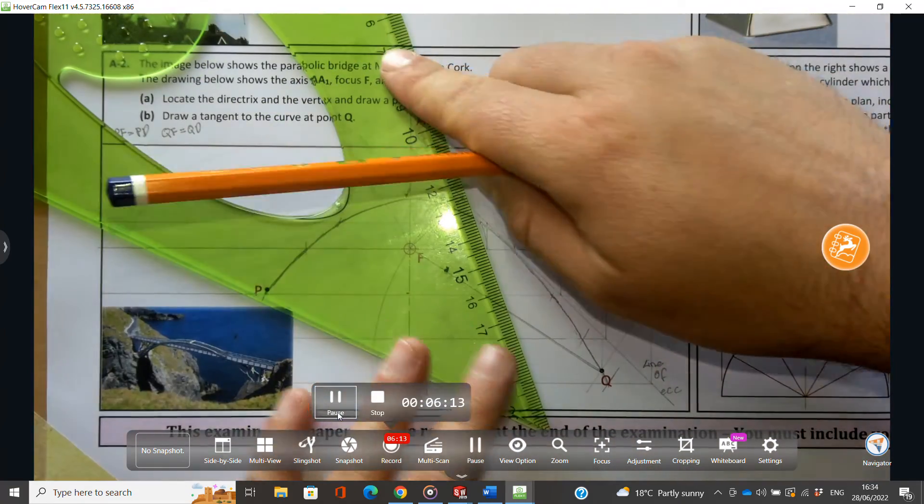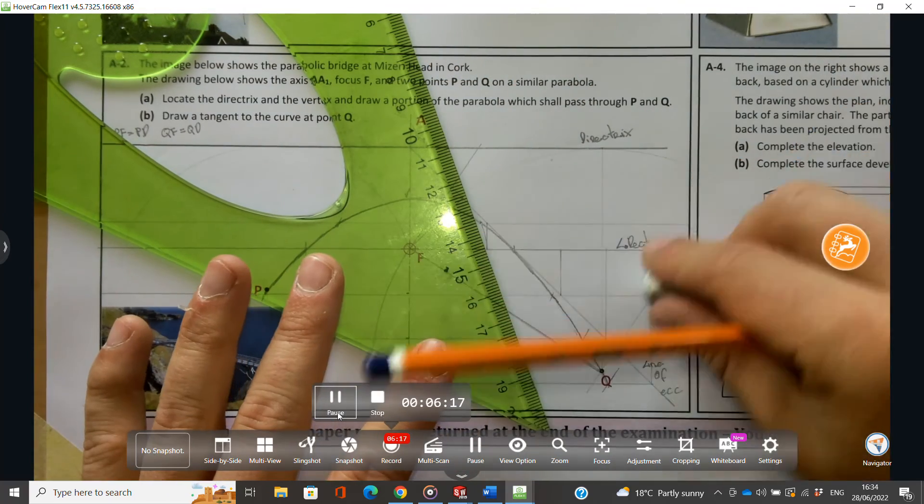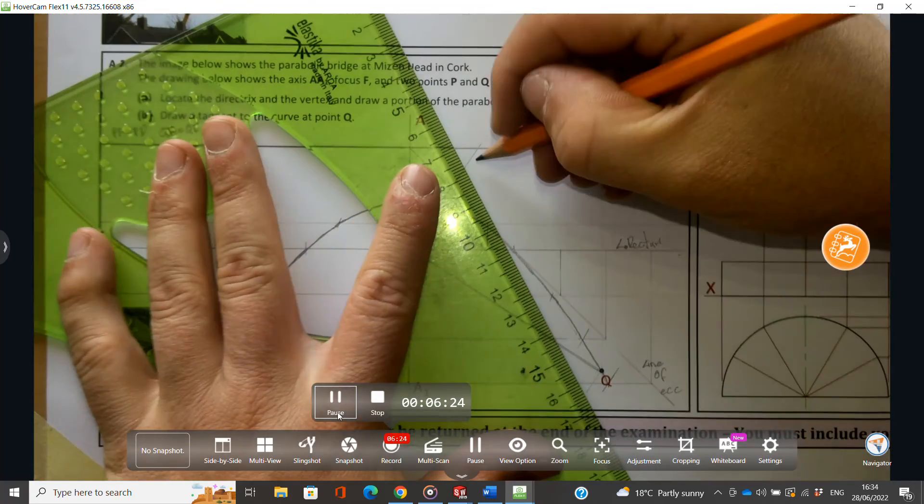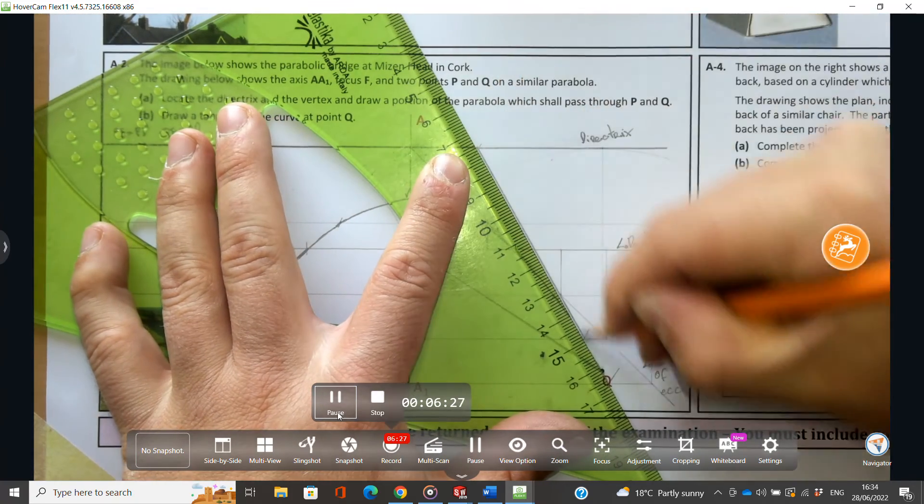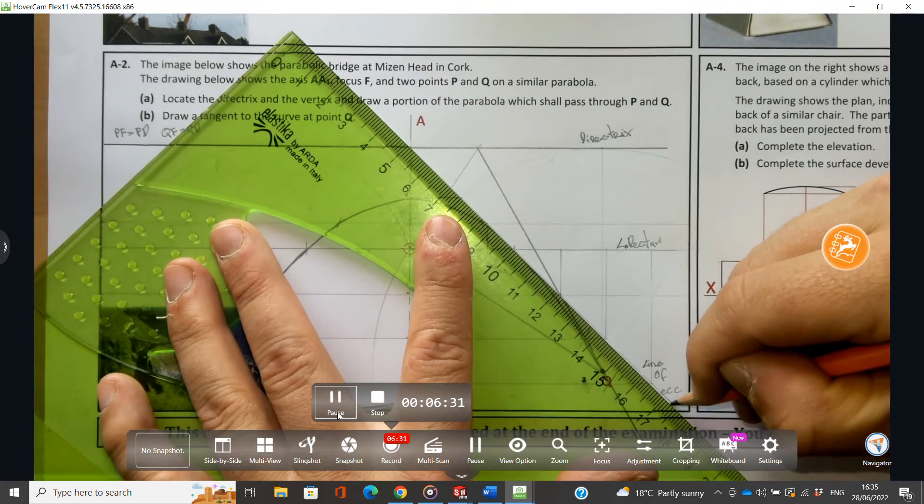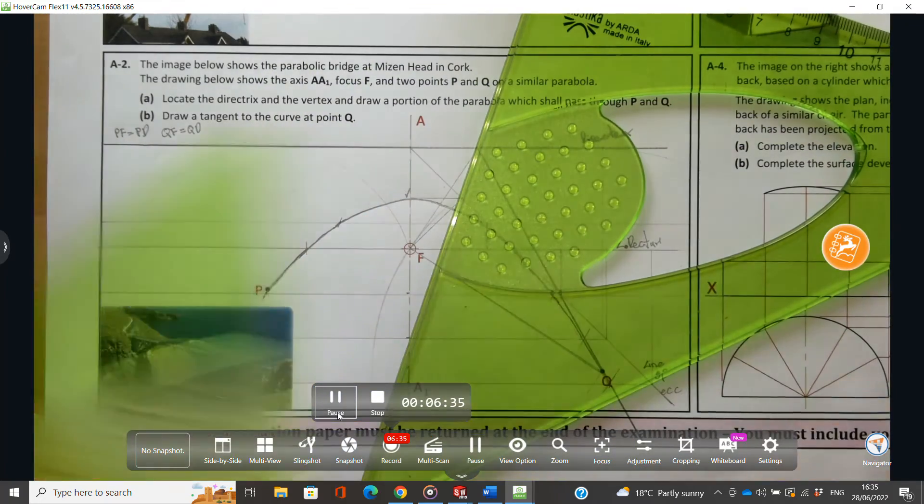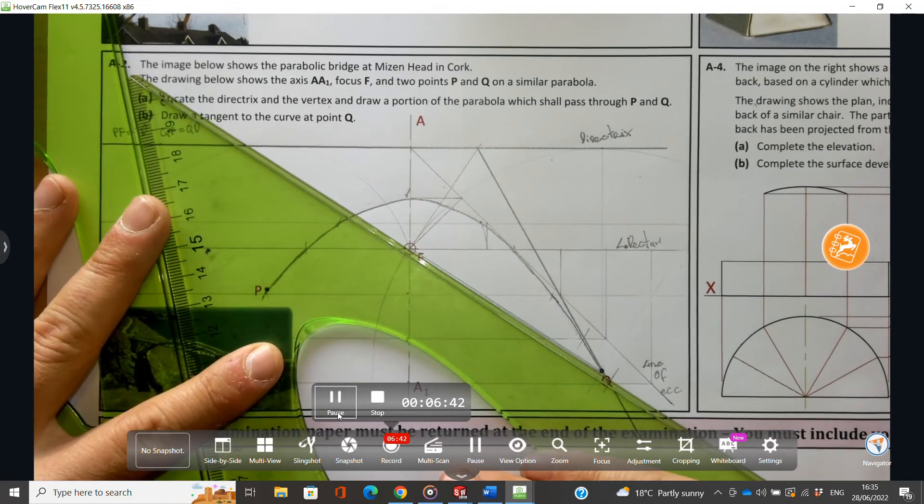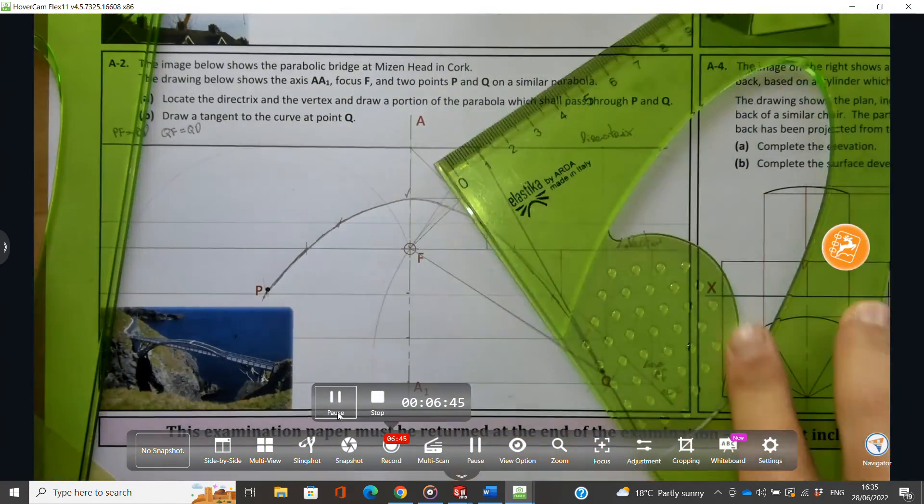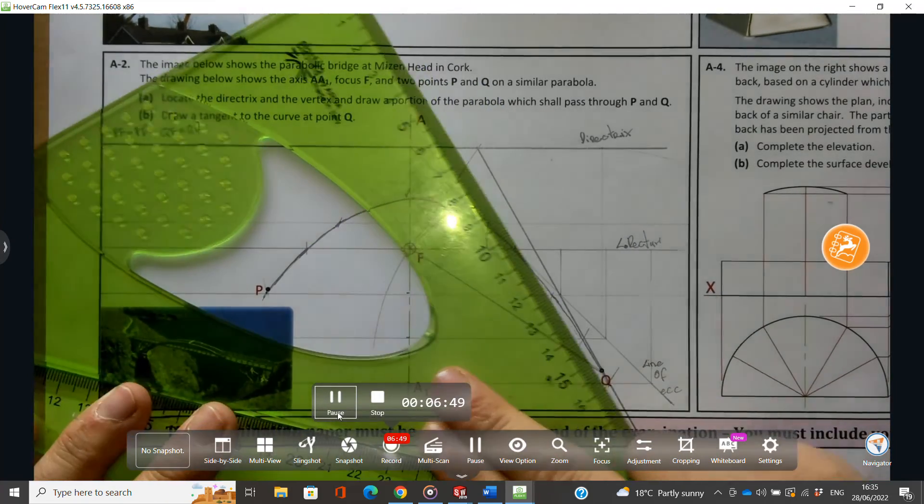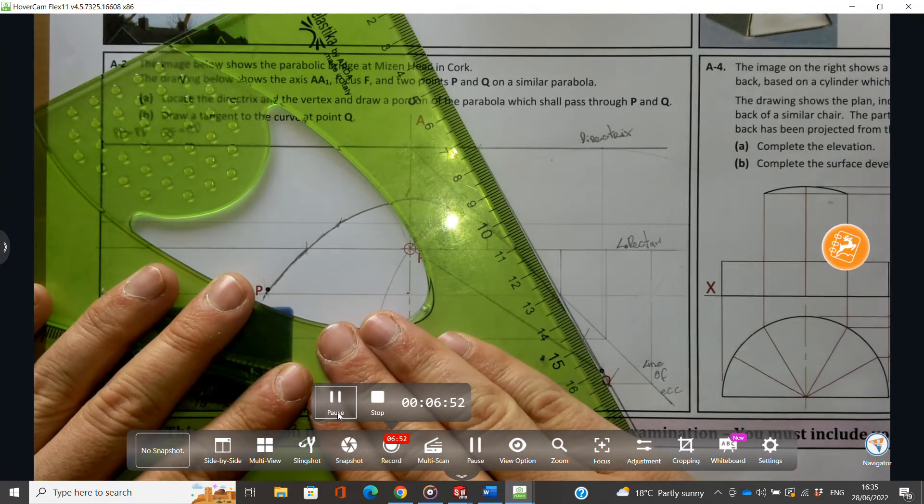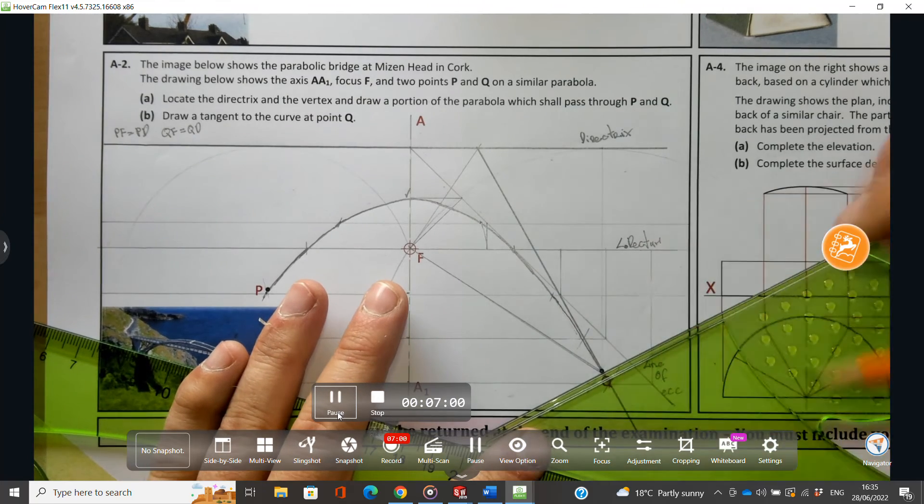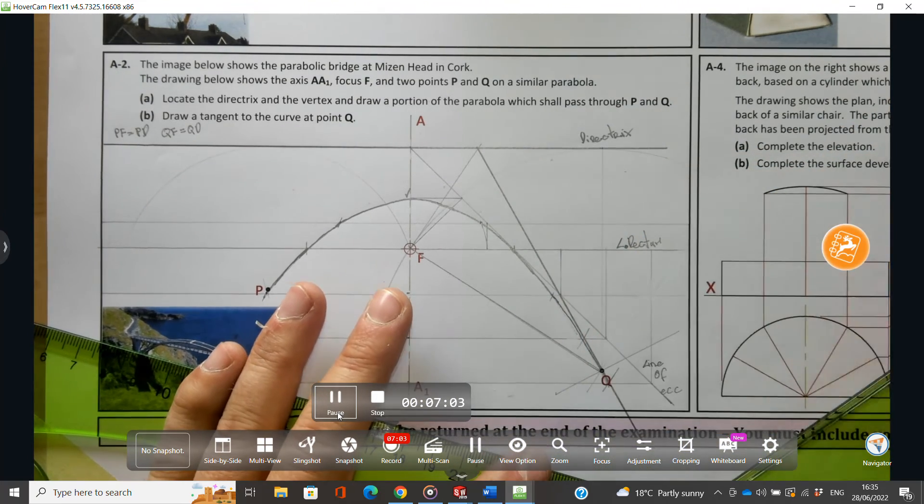Or sorry, that's not my normal, what am I on about. I'm going to join that to Q. So there's my tangent. I can line up my set square with the tangent, and there's my normal there.